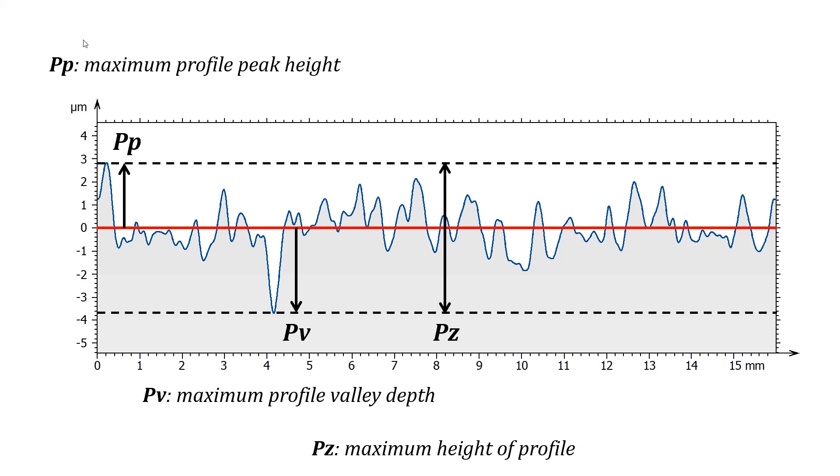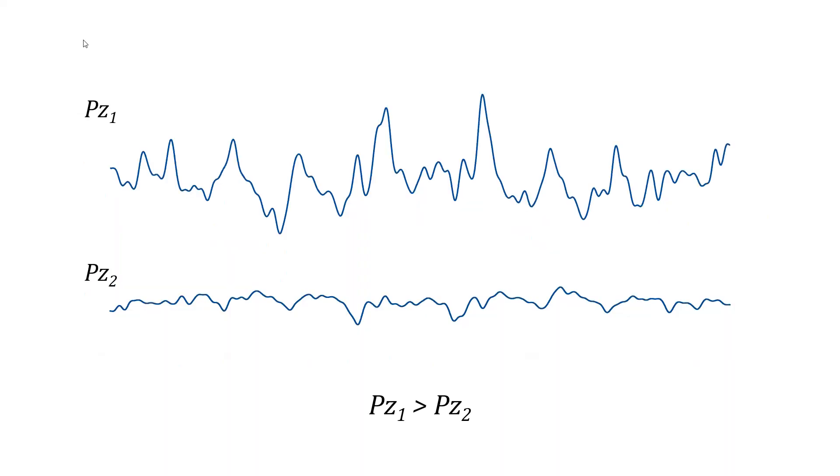However, it is very sensitive to outliers, extreme peaks or valleys that are not significant in terms of function of the surface. The pz parameter makes it possible to discriminate two surfaces by comparing their maximum heights.